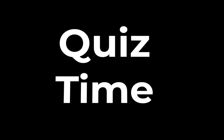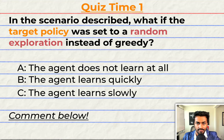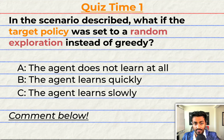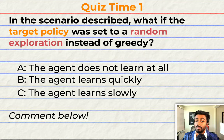Quiz time! Have you been paying attention? In the scenario described, what if the target policy was set to random exploration instead of greedy? Would the agent not learn at all, does the agent learn quickly, or does the agent learn slowly? Leave your answer in the comments below — bonus points for any reasoning.